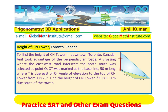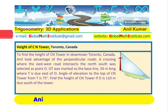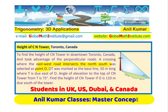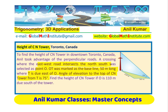Now let us read the question. To find the height of CN Tower in downtown Toronto, Canada, Anil took advantage of the perpendicular roads. A crossing where the east-west road intersects the north-south was selected as point O. OT was marked as the baseline 50 meters long, where T is due south of O. The angle of elevation to the top of the CN Tower from T is 75 degrees. Find the height of CN Tower if O is 110 meters due south of the tower.